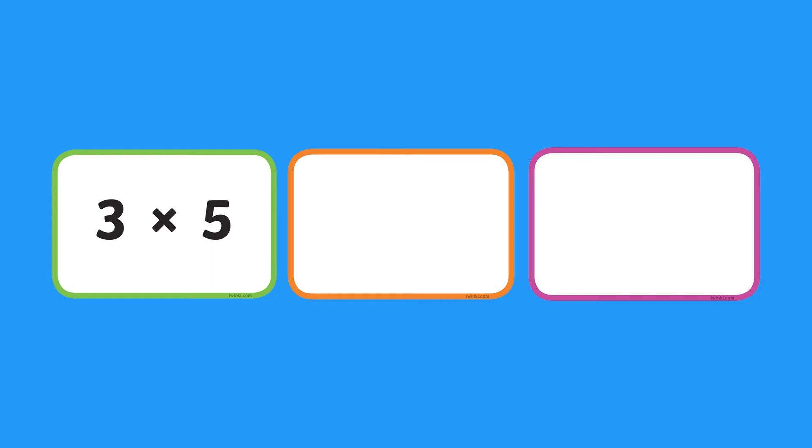In activity one, show just one of the flashcards to start and then place a series of flashcards face down in a line.